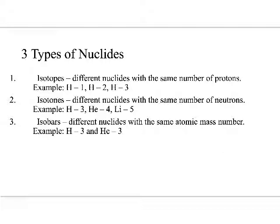There are three different types of nuclides. Isotopes have the same number of protons but are different nuclides — H1, H2, and H3 are all isotopes. Isotones are different nuclides with the same number of neutrons. H3, helium-4, and lithium-5 have the same number of neutrons — remember the N in isotones.